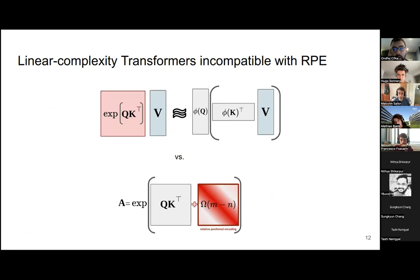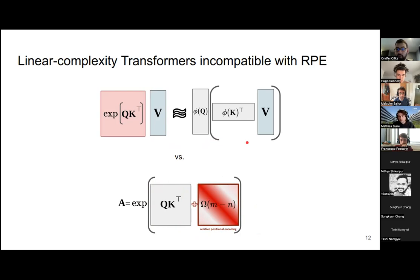However, linear complexity transformers are not compatible with RPE. To compute RPE we need to access the attention matrix in order to augment it with positional information — but computing that matrix is exactly what linear complexity transformers are trying to avoid. This is what we are addressing: we want a relative positional encoding compatible with this way of computing attention.